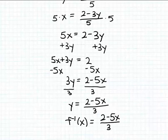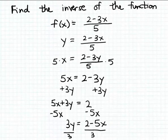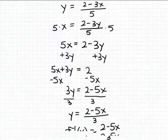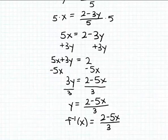By the way, I should have mentioned to start this example that we know that f, this function f, has an inverse. In other words, it's a one-to-one function because this is a linear function. All linear functions have inverses except for horizontal lines, but this is not a horizontal line. So for the function f of x equals 2 minus 3x divided by 5, its inverse function formula is f inverse of x equals 2 minus 5x divided by 3.